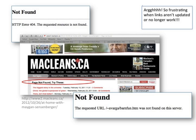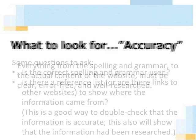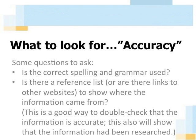Anyway, on with our list of criteria. Now we're going to look at accuracy. Obviously, information and the way in which it's presented needs to be accurate — it has to be correct. So that means everything from the spelling and grammar to the actual content of the website must be clear, error-free, and well-researched. So how can you double-check the accuracy? Here are some questions. Is the correct grammar and spelling used? Is there a reference list or links to other websites to show where the information came from? This is a good way to double-check that the information is accurate and will also show that the information has been researched.